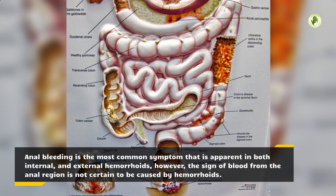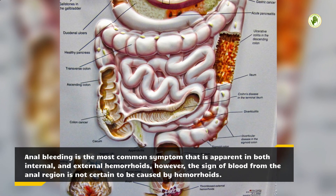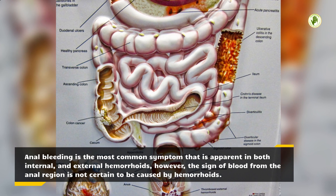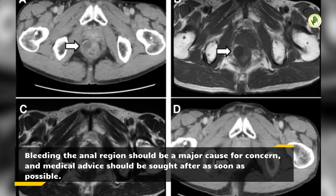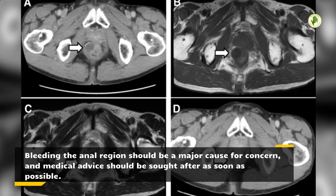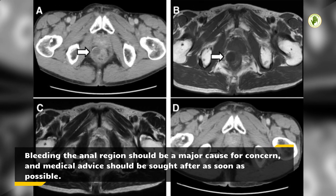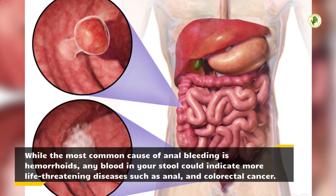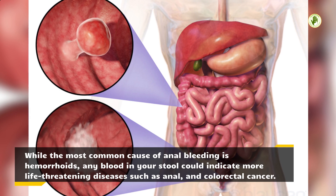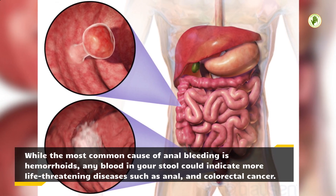Anal bleeding is the most common symptom apparent in both internal and external hemorrhoids. However, the sign of blood from the anal region is not certain to be caused by hemorrhoids. Bleeding in the anal region should be a major cause for concern, and medical advice should be sought after as soon as possible. While the most common cause of anal bleeding is hemorrhoids, any blood in your stool could indicate more life-threatening diseases such as anal and colorectal cancer.